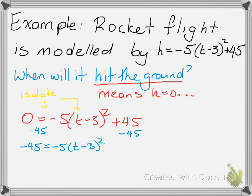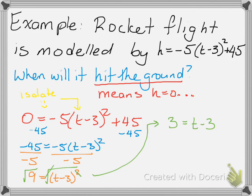By subtracting 45 from both sides. Then the next thing we can probably try to do is get rid of that negative 5. We're going to divide both sides by negative 5. And now we have to get rid of that square, and the opposite of squaring is square rooting. So we'll square root both sides, and the square root and the square cancel out because they're opposites of each other. The square root of 9 on the left side is 3, so we end up with 3 is equal to t minus 3.